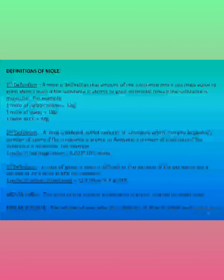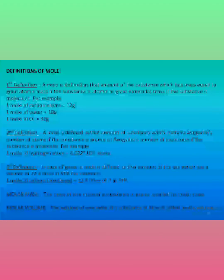The second definition is related to Avogadro's number. A mole is defined as that amount of substance which contains Avogadro's number of atoms if the substance is atomic, and Avogadro's number of molecules if the substance is molecular. For example, one mole of hydrogen atoms contains 6.022 × 10²³ atoms.